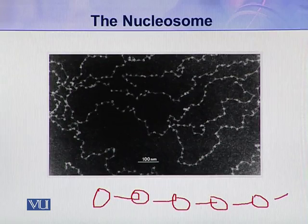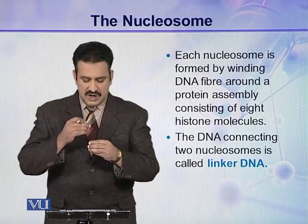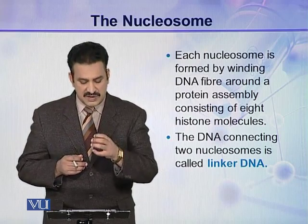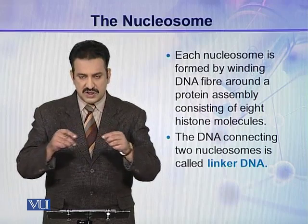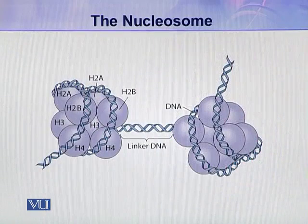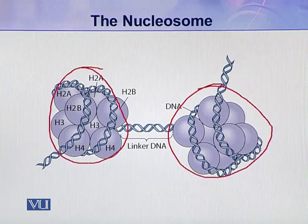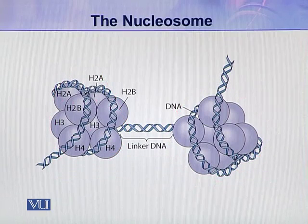These beads are called nucleosomes. Each nucleosome is formed by a winding DNA fiber around a protein assembly consisting of 8 histone molecules. The two nucleosomes in the string are connected through DNA called linker DNA. Here you can see two nucleosomes — each consisting of 8 histone molecules — connected through this linker DNA. This is the structure of uncondensed chromatin.